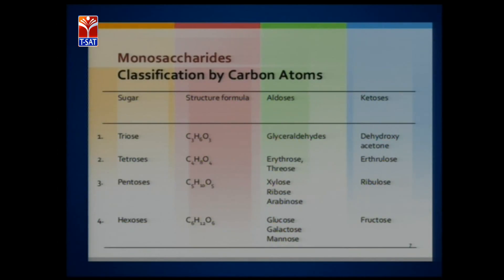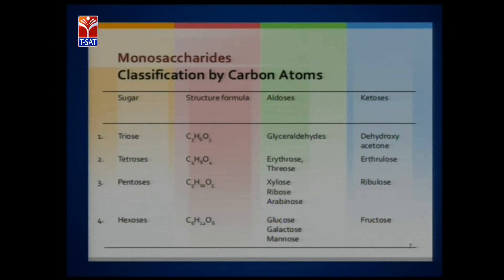Nucleic acids contain ribose sugar, that is why we call them ribonucleic acid. Ribose sugar is present in RNA, and deoxyribose sugar is present in DNA molecules. Nucleic acids contain nucleotides; in the nucleotides we find this pentose sugar. For hexoses, glucose, galactose, and mannose are examples of aldoses. Glucose is an aldose as well as a 6-carbon sugar, that is why it is called an aldohexose. Fructose — the fruit sugar — is a keto sugar and a 6-carbon monosaccharide, that is why it is called a ketohexose.